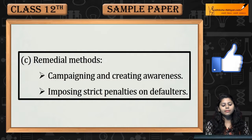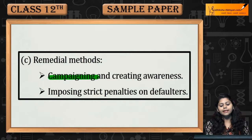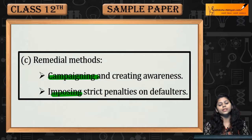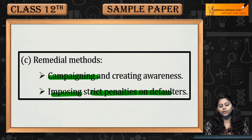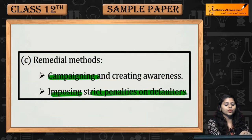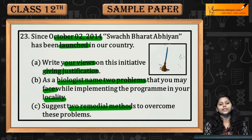Remedial methods include campaigning and creating awareness, and imposing strict penalties on defaulters. This was question number 23.